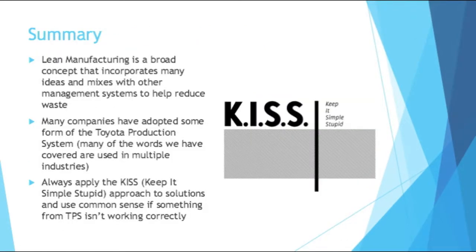In summary, lean manufacturing is a broad concept that incorporates many ideas and mixes with other management systems to help reduce waste. It isn't one singular defined thing. Many companies have adopted some form of the Toyota production system, and many of the words we've covered are used in multiple industries — not just engineering, but also management, service industries, and more. In general, if you're struggling with a tool from the lean manufacturing toolset, just remember: always apply the KISS approach — keep it simple, stupid — to solutions. Use common sense. If something's not working, even if it's worked in other places before, don't use it. Look at the facts and see what is making a difference.